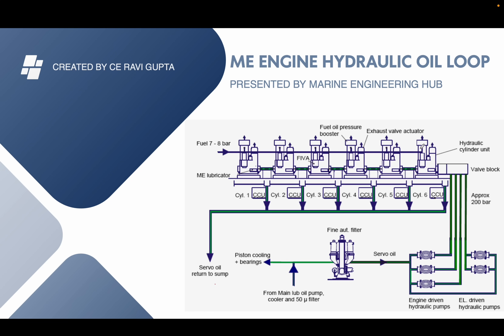After performing valve actuation and fuel injection, the oil is drained from each unit and returns back to the system, forming a closed loop. In synopsis: from the lube oil pump it is filtered by the auto backwash filter, then pressurized to around 200 bar by the hydraulic pump, then goes to the valve block assembly where the CCU activates the FIVA valve depending on the signal from the ECU. After fuel injection and valve actuation the oil returns back to the system.